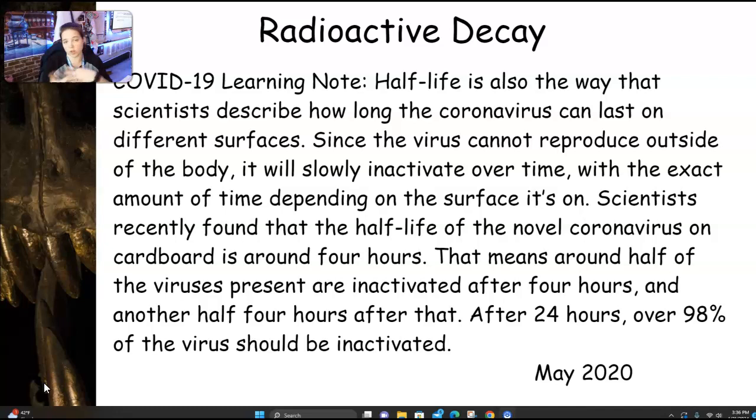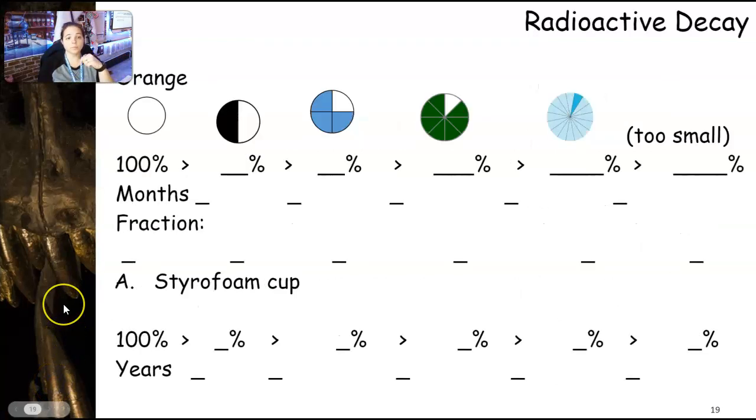They were going to use half-life to determine how long it would take the coronavirus to die outside of the body, because viruses can't survive outside. Scientists were looking at cardboard. They noticed one half-life would be about four hours, meaning that in four hours, half of that amount of COVID-19 that hit the cardboard became inactive. So we're going to start looking at how we can use radioactive decay, those half-lives, to determine how old something is.